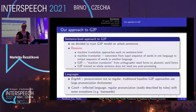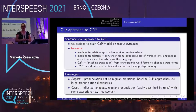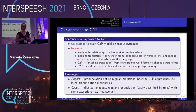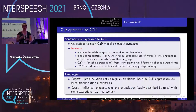In our paper, we decided to train a G2P model on whole sentences. The reasons were that a G2P model trained on whole sentences hopefully does not need any post-processing work, and machine translation approaches usually work at the sentence level. We can look at G2P as a machine translation from orthographic word forms to phonetic word forms.